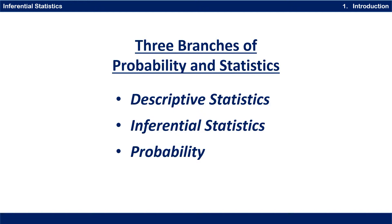There are three main branches of probability and statistics: descriptive statistics, inferential statistics, and probability. Earlier in the course we had a playlist for descriptive statistics — that was Unit 1. Then we have three units on probability: playlist 2 was about discrete probability, which is units 2a and 2b, and unit 3 is on continuous probability. And then unit 4, this unit, is on inferential statistics.